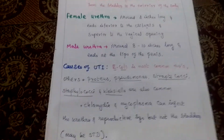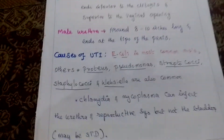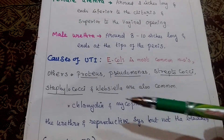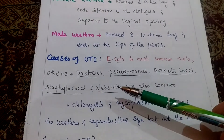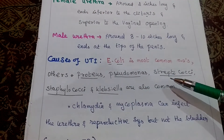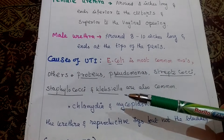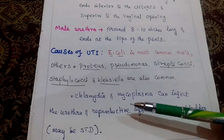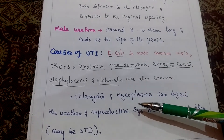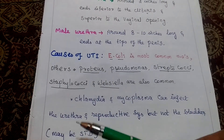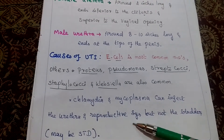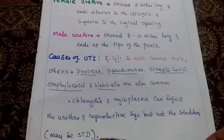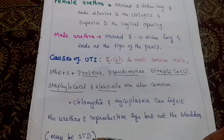What are the organisms causing urinary tract infection? E. coli is the most common microorganism. Others include Proteus, Pseudomonas, Streptococcus, Staphylococcus, and Klebsiella. Chlamydia and Mycoplasma can infect only the urethra and reproductive system, but not the bladder, and are sexually transmitted.